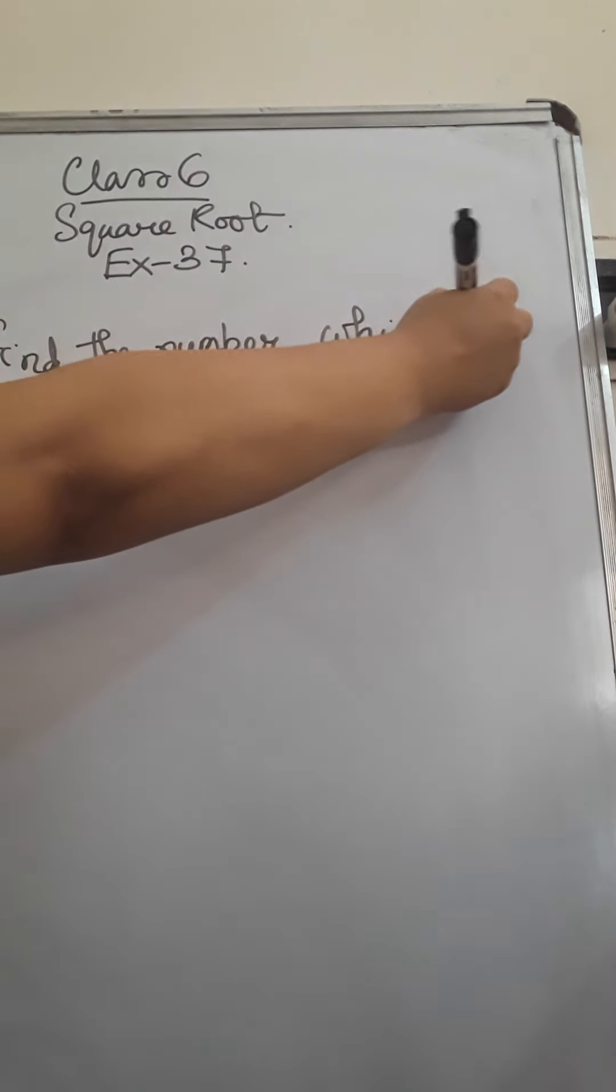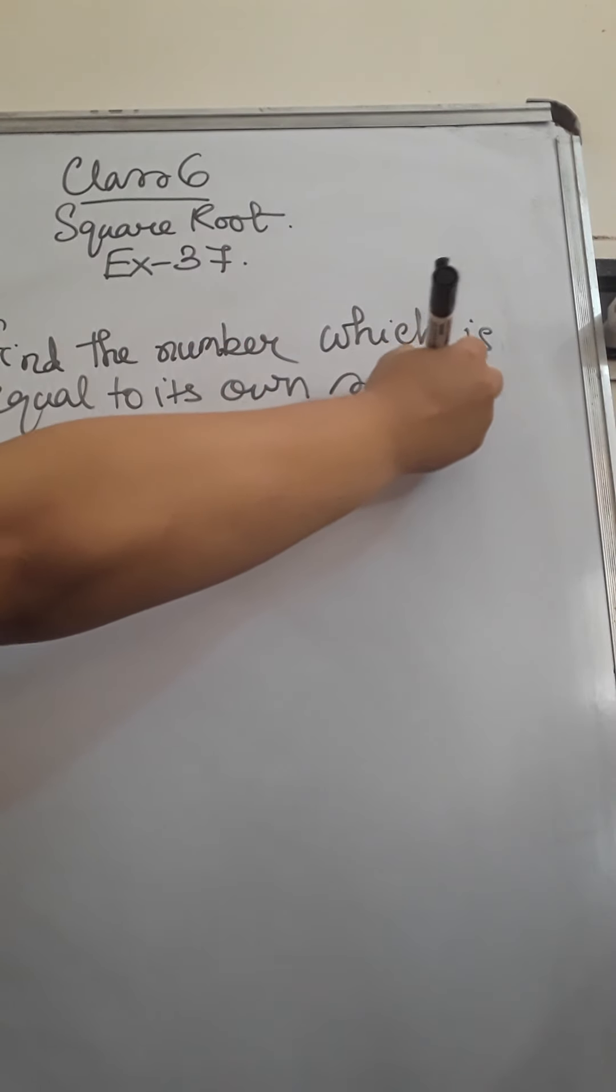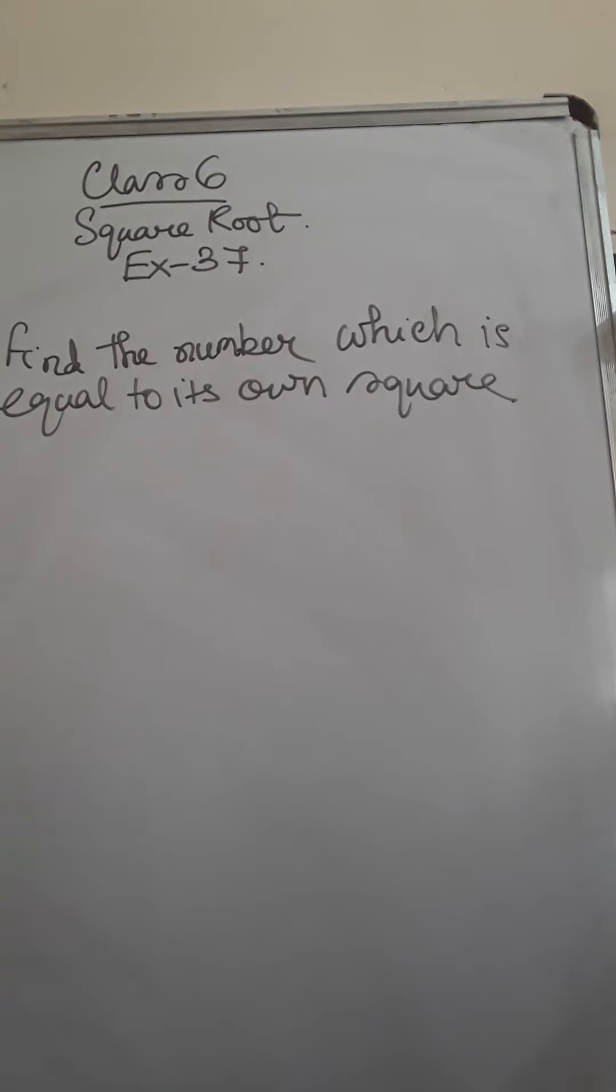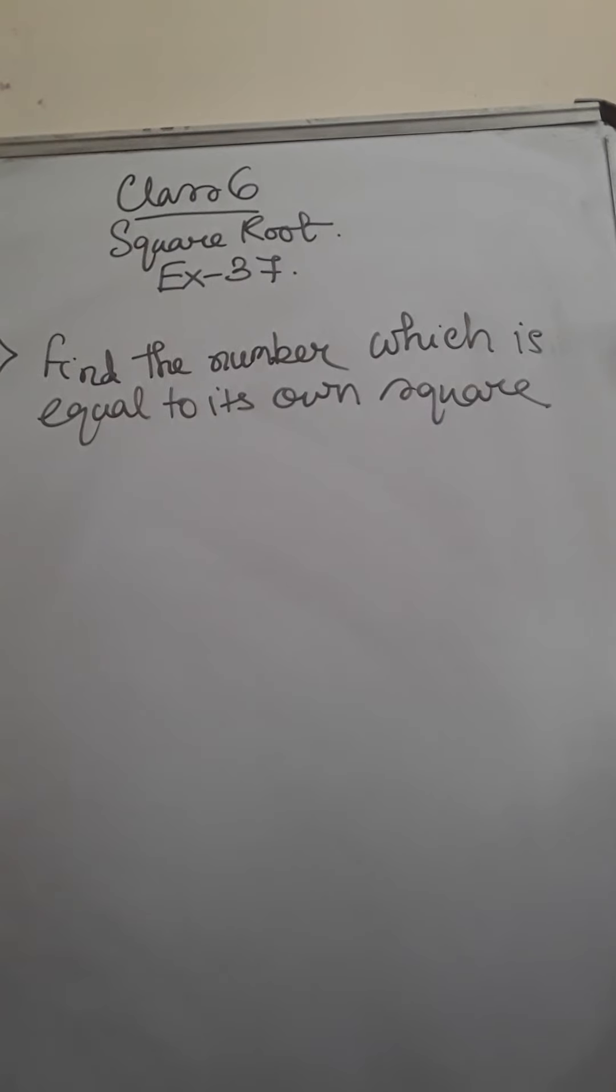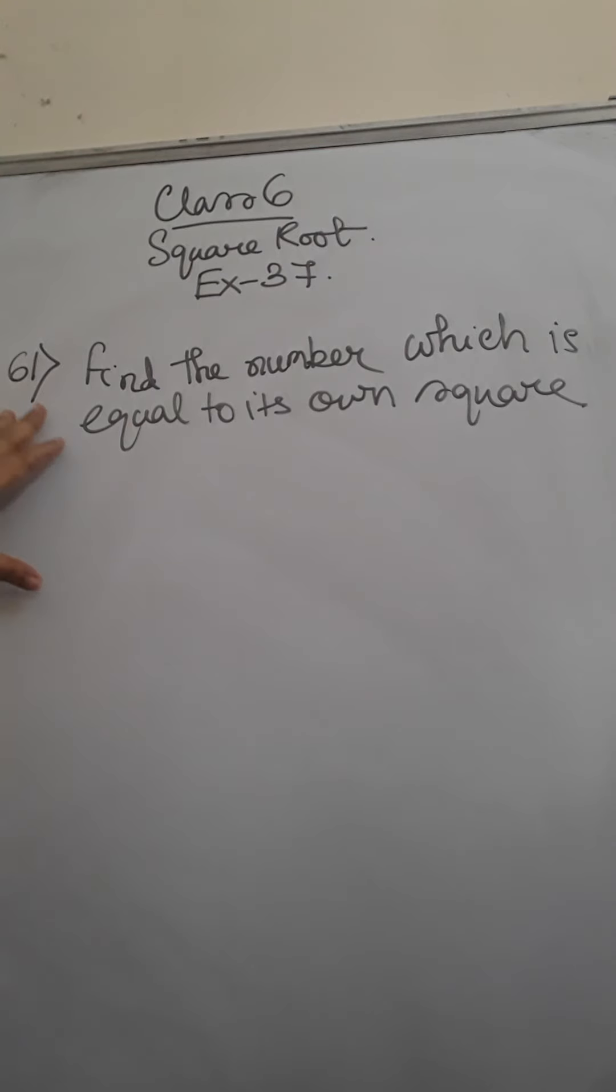Now the question here is find the number which is equal to its own square. Now question number 61 and 62 are more like same, so 61 we will do and after that we will be doing 62.